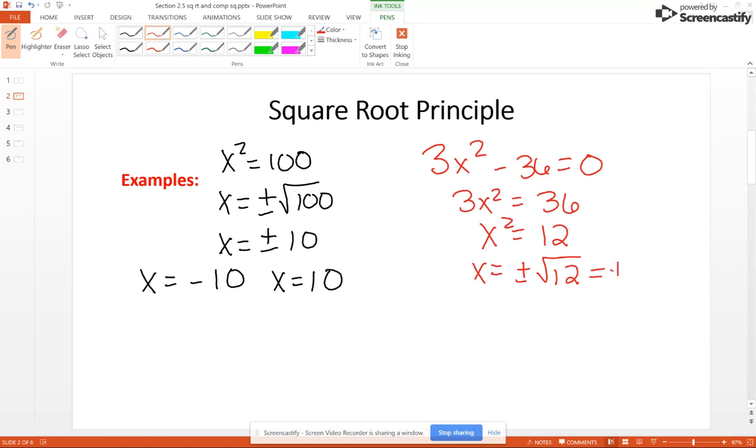12 has a square root factor of 4, so we're going to rewrite that as plus or minus the square root of 4 times 3, and then that's going to become plus or minus the square root of 4 times the square root of 3. So we finally get x equals – square root of 4 is 2, so plus or minus 2 square root of 3.